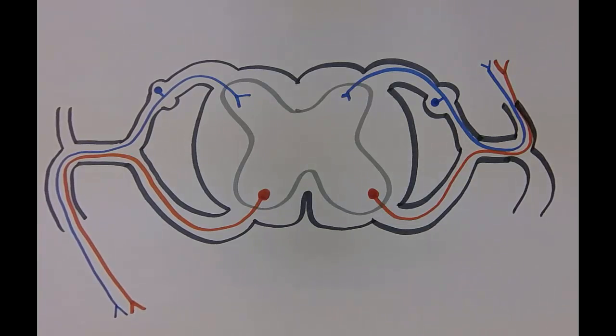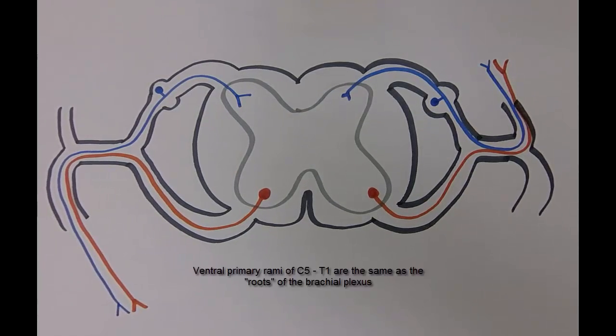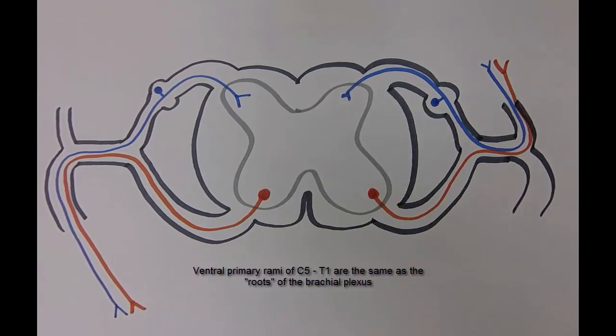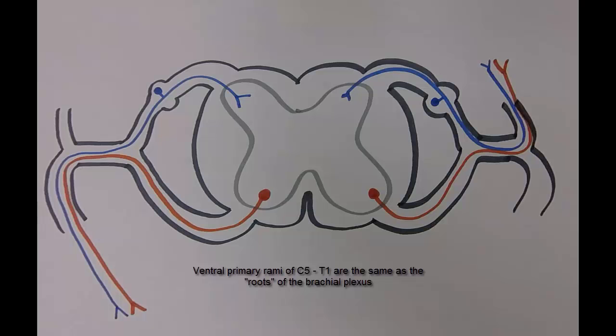When we talk about the roots of the brachial plexus, what we're referring to are the ventral primary rami from C5, C6, C7, C8 and T1.